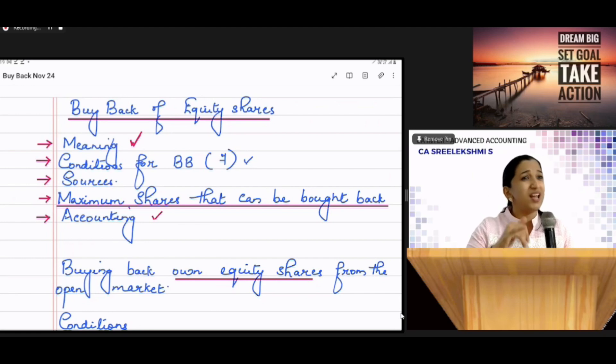What are the conditions for buyback? Section 68 deals with buyback. Section 68 of Companies Act deals with buyback. As per section 68, you have written seven conditions.